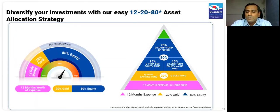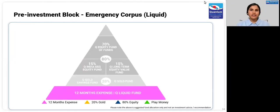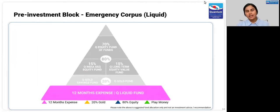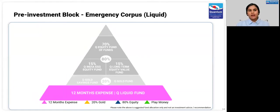The speakers next — Pankaj, Nilesh, and Chirag — will tell you about why you should invest in gold, what the emerging gold opportunity is, and how to look at investing in equities over a period of time to achieve this 12-20-80 asset allocation strategy. Thank you. That was a comprehensive macroeconomic outlook. We will now get into the specifics of each asset class. I request Pankaj to share his views on fixed income.